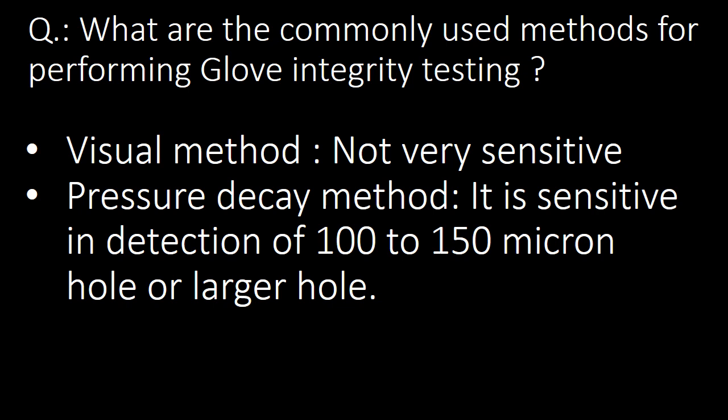The next important question: what are the commonly used methods for performing glove integrity testing? There are two commonly used methods: the visual method and the pressure decay method. The visual method can detect macro or major defects and is considered a less sensitive method, whereas the pressure decay method is the most preferred method and is sensitive in detection of 100 to 150 micron holes or larger.